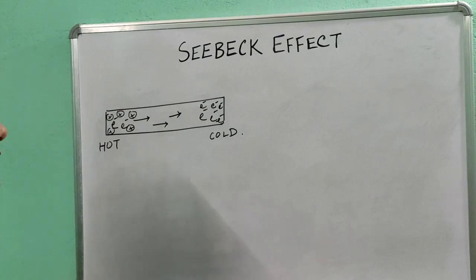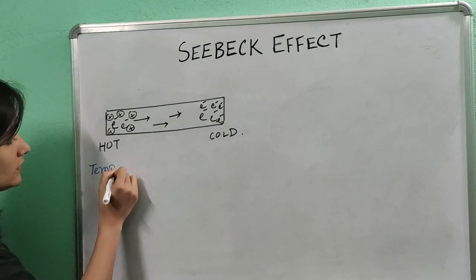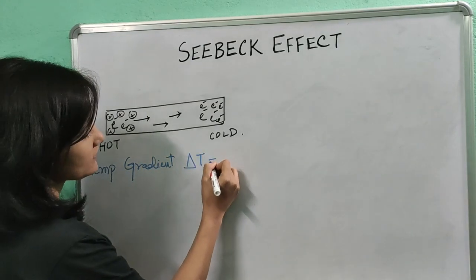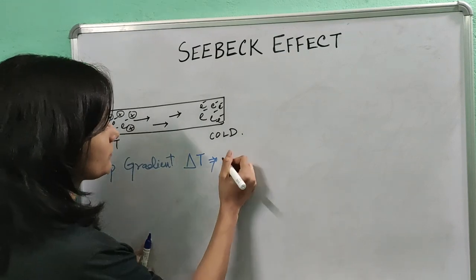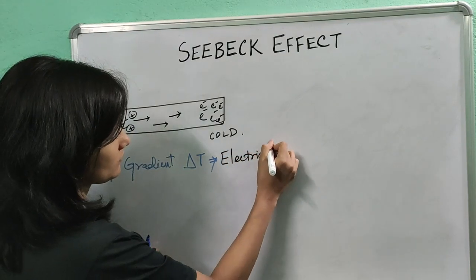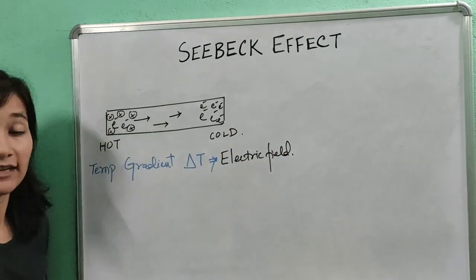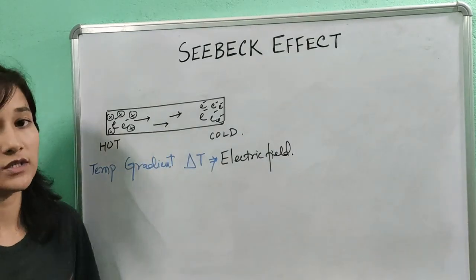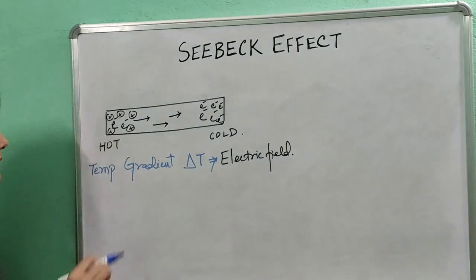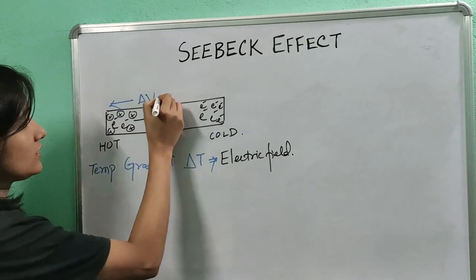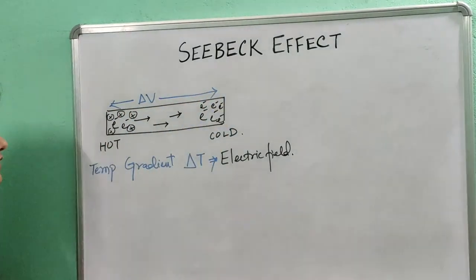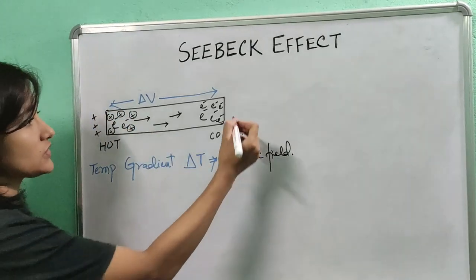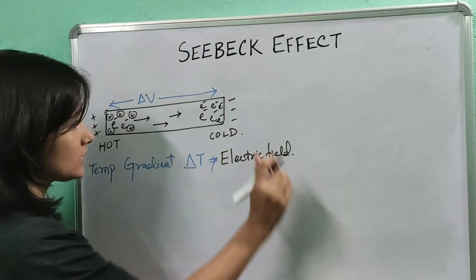This temperature gradient delta T will result in the generation of an electric field, and that electric field will oppose the further movement of electrons from the hot towards the cold region. This will lead to development of a voltage delta V across the two ends of the metal, with the hot region having the positive potential and the cold region having the negative potential.